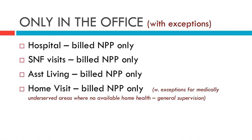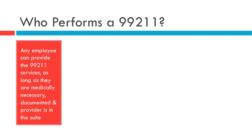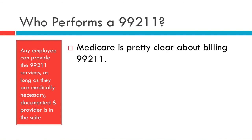Incident 2 is only applicable in the office. If your nurse practitioner, PA, or any other non-physician practitioner goes to the hospital, you can't bill those under Incident 2 — you have to bill under their own number. The same applies to a skilled nursing facility, nursing home, assisted living, or home visits. With home visits, you must bill under the non-physician practitioner, except in a medically underserved area where no available home health exists — then you can bill under the physician's number under general supervision.